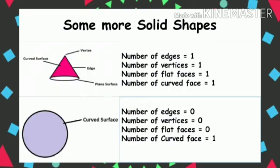In the next picture you can see two more solid shapes. The first one is a cone and the second is a sphere. In a cone, there is only one edge and one vertex. There is one flat surface at the bottom — the circular part — and one curved surface, which is the round sides of the cone.